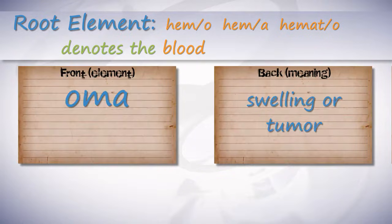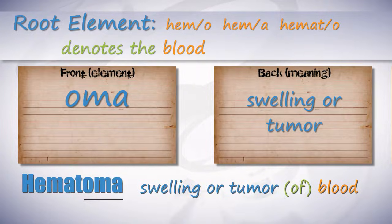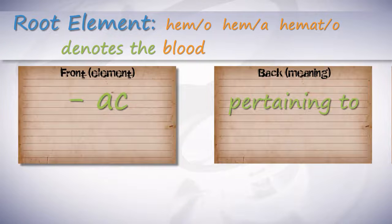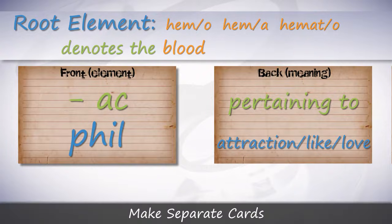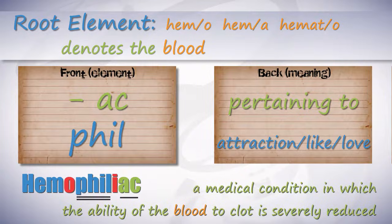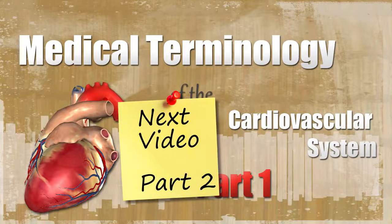-ptysis means spit up. Hemoptysis is to spit up blood. -oma means swelling or tumor. Hematoma is a swelling or tumor of the blood — this is known as a bruise, a swelling of clotted blood. The suffix -ac means pertaining to, and -phil means attraction or love. Hemophiliac means pertaining to attraction of blood. In actuality, this is a medical condition in which the ability of blood to clot is severely reduced. That's it for part 1 — check out part 2 for more medical terminology pertaining to the cardiovascular system.